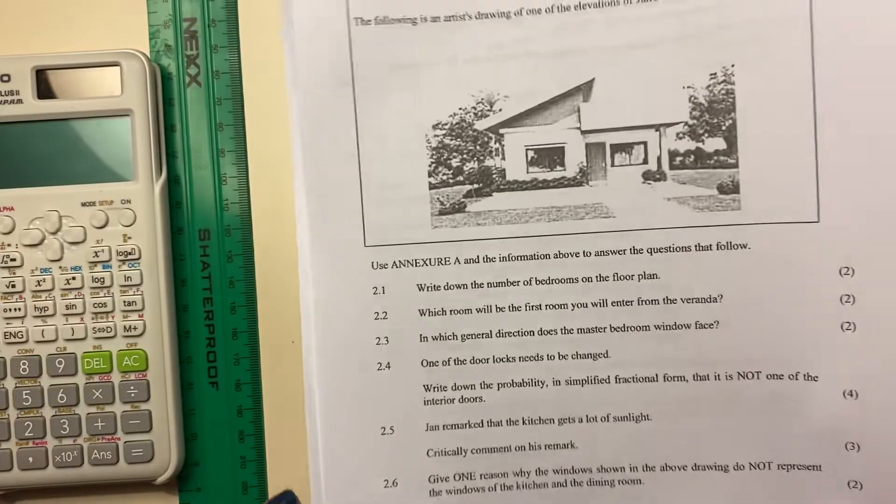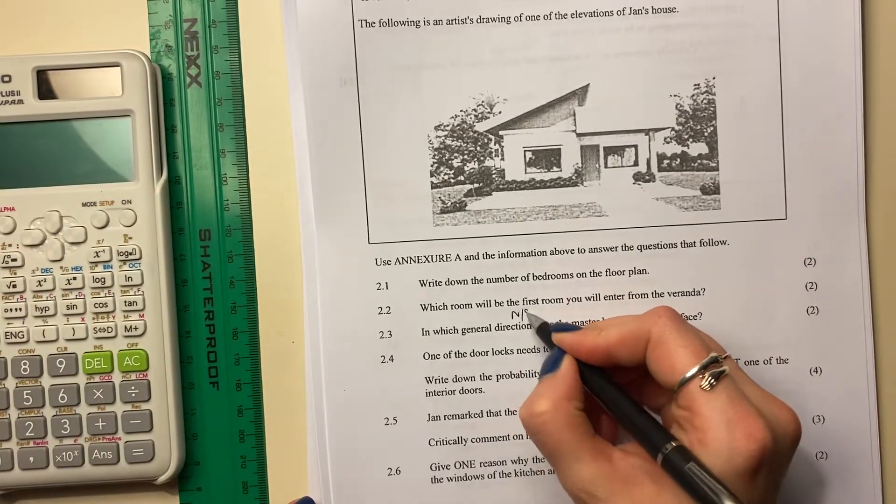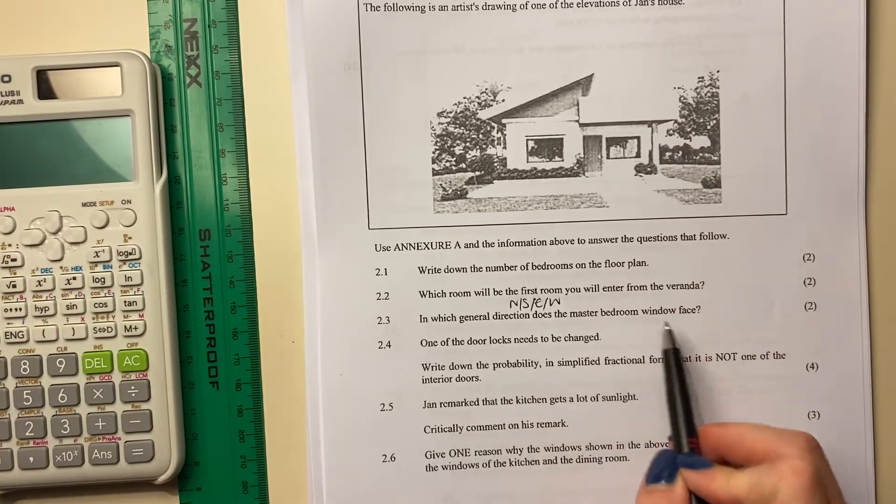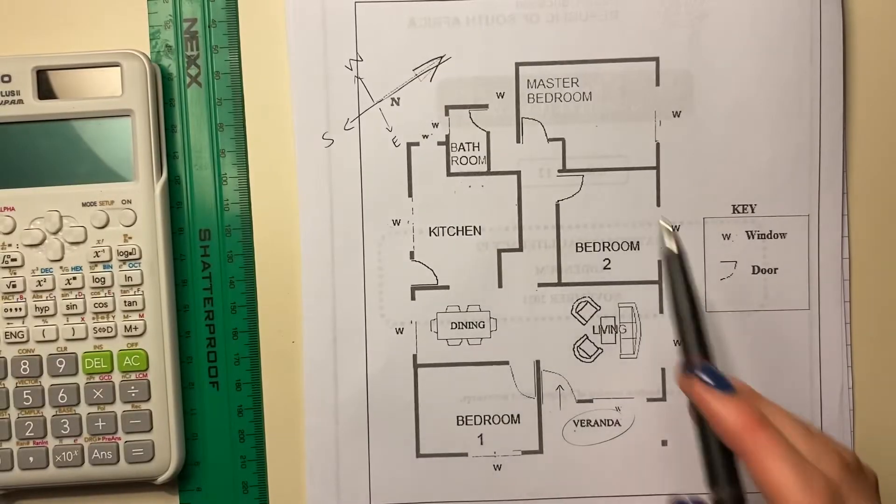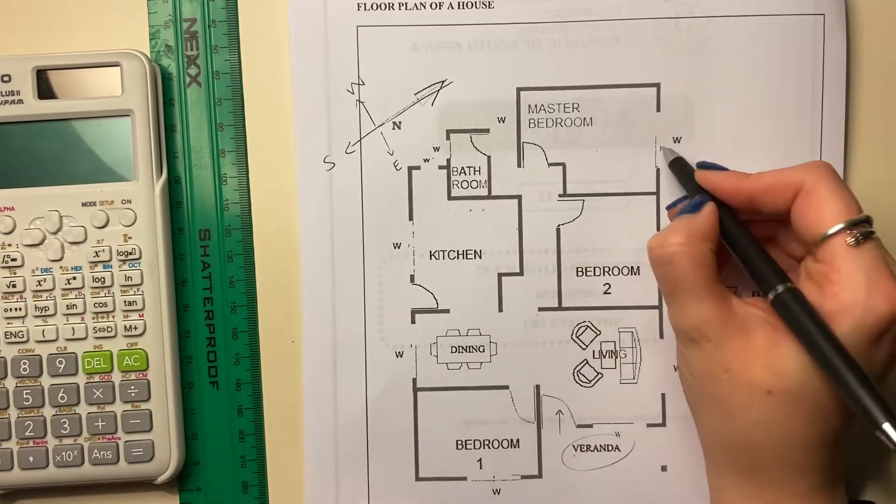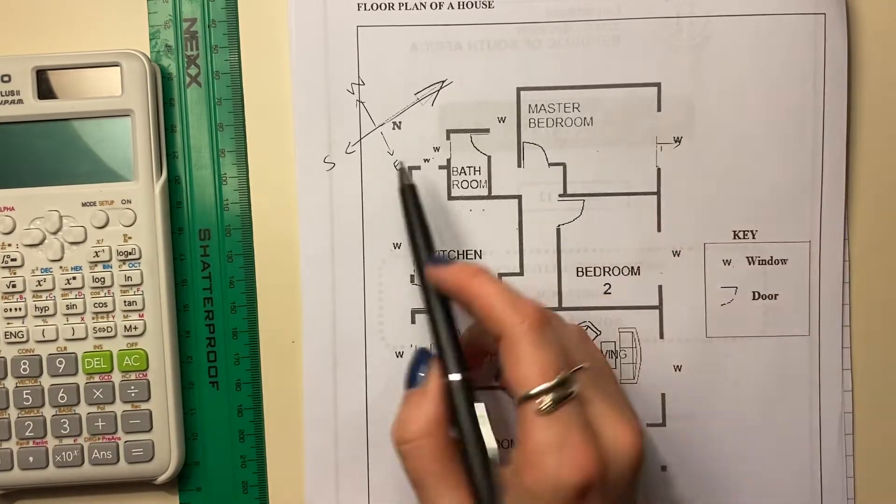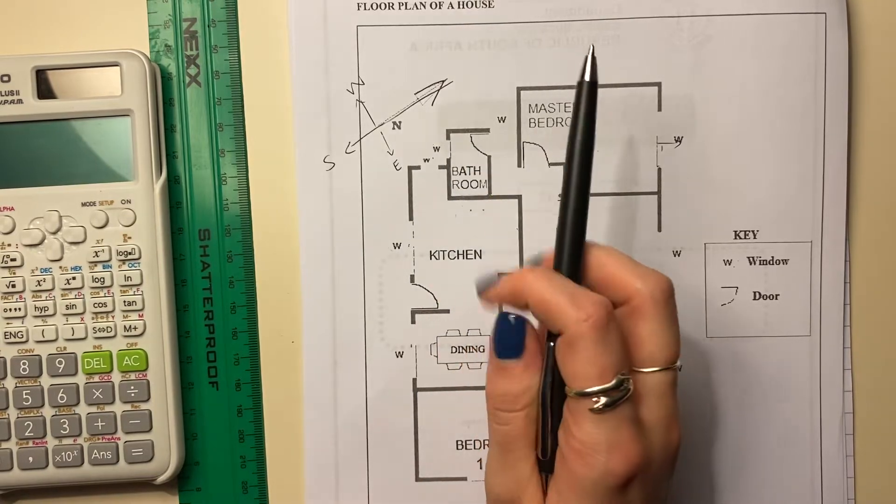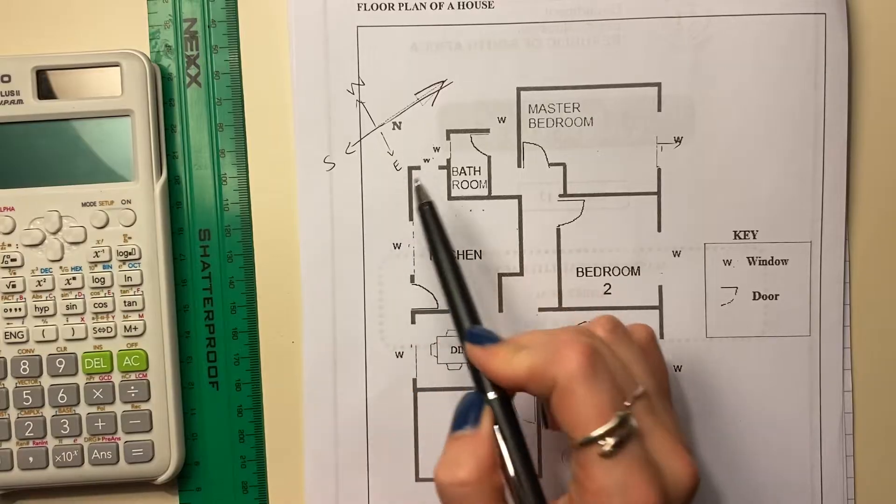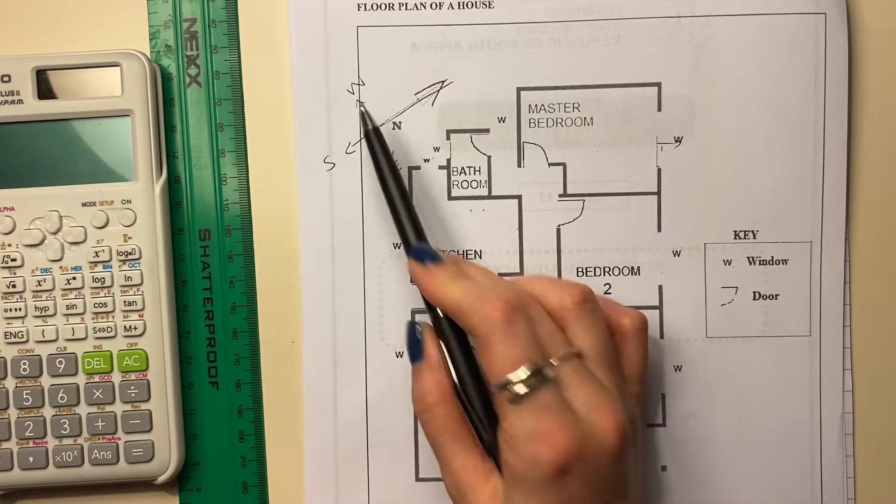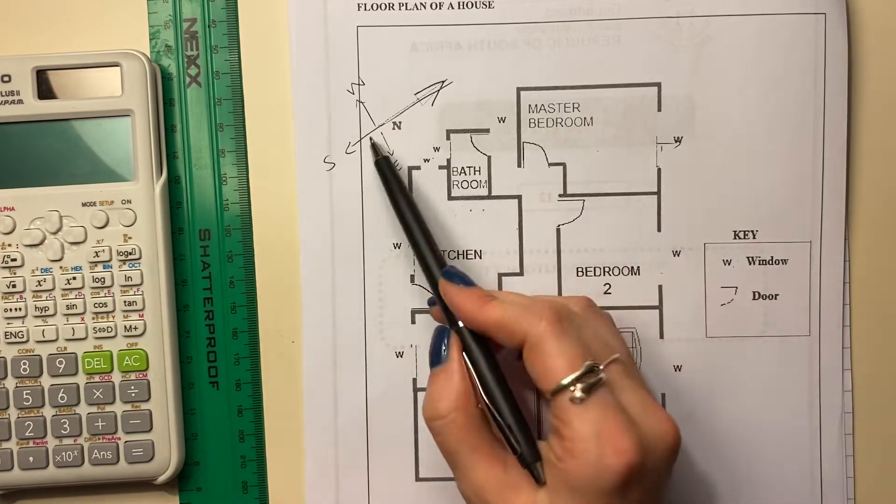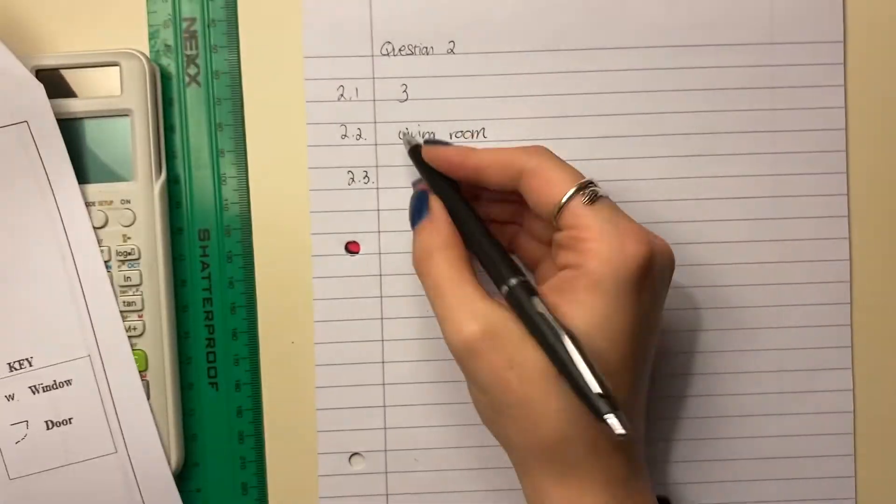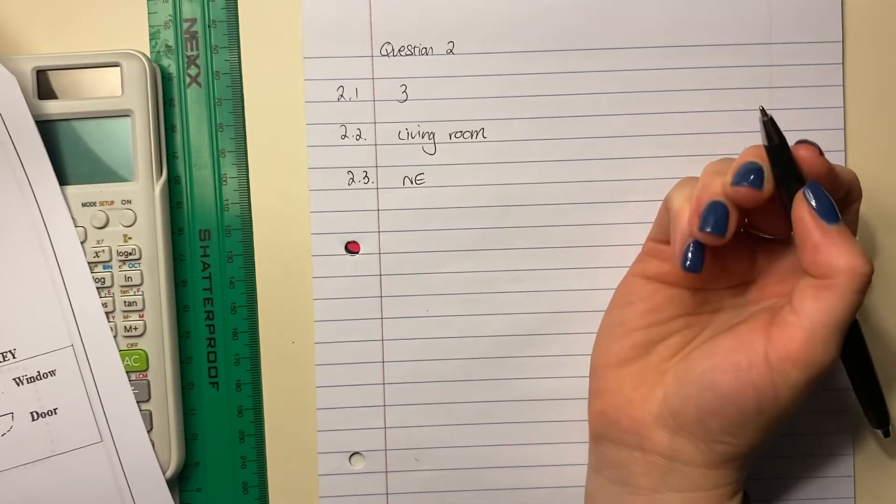2.3. In which general direction - so here we're talking about North, South, East, West - does the master bedroom window face? So master bedroom. We're over here. There's the window. So it's kind of facing between North and East. Remember, you always name your main cardinal point, which is North or South first. And then your secondary cardinal point, which would be East or West. So in this case, it's going to be North East because it's in between those two. So you can just write it as N-E or North East.